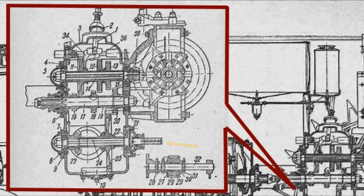It was also possible to install a removable power take-off pulley in this tractor. For this purpose, a special window was provided in the box, and an additional gear was on the shaft.